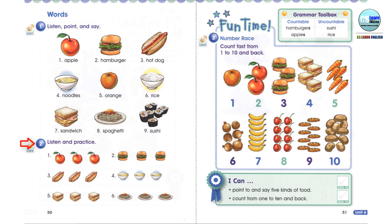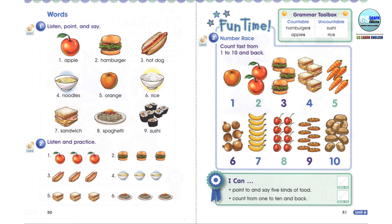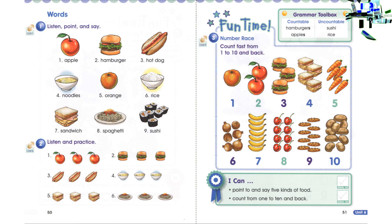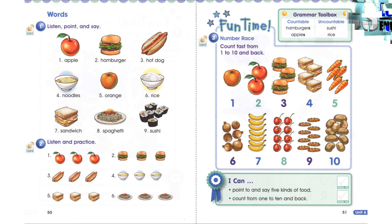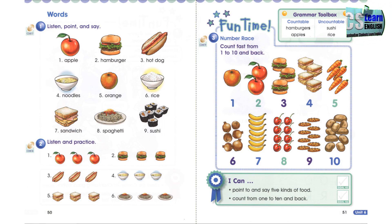Exercise 2: Listen and practice. 1 apple, 2 hamburger, 3 hot dog, 4 noodles, 5 sandwich, 6 spaghetti.